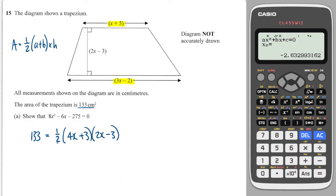First thing I'll do is multiply both sides by 2, because this side is times by half, multiplying by 2 will cancel that, so that'll give me 266 equals 4x plus 3 times 2x minus 3. That's going to make things much easier, because I don't want to be dealing with halves.